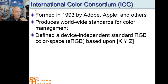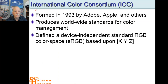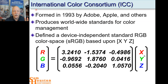They've defined a device-independent standard for an RGB color space based upon X, Y, and Z. They took the 1931 Commission on Color and updated it with standard RGB values. With scientific tools, we measure X, Y, and Z, then use the agreed-upon matrix to turn those into RGB values. For matrix multiplication, you take the top three values — 3.2, minus 1.5, and minus 0.5 — and multiply by the X, Y, Z triple of numbers. So 3.2 times X plus minus 1.5 times Y plus minus 0.5 times Z gives the R value.